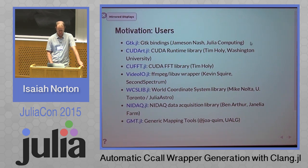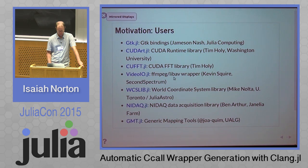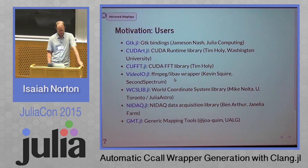Clang.jl is used by several packages, including GTK and a couple of CUDA wrappers, and more recently a very nice video I/O package by Kevin Squire, which wraps FFMPEG and whatever they're calling the new fork of that, as well as a couple of others: NIDAC, GMT, and WCSlib. These all have in common that they are fairly large libraries. GTK has probably high hundreds of signatures, and the others are fairly large as well.